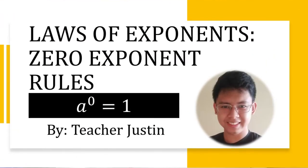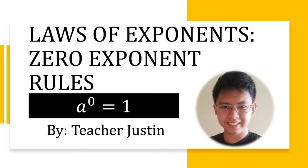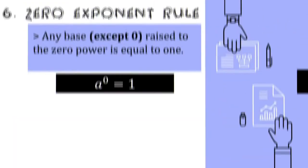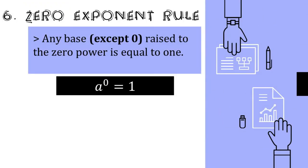Good day everyone, welcome to Math with Teacher Justin. On today's topic, we're going to discuss laws of exponents: the zero exponent rule. Any number raised to zero is always equal to 1. Now the question is why, and how does this relate